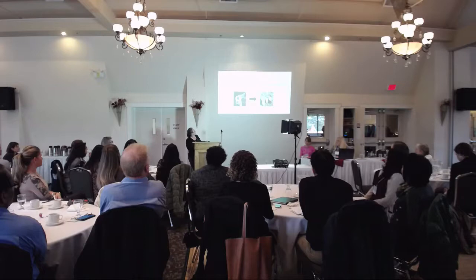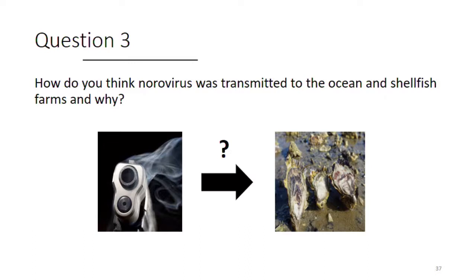So the next question — what was the smoking gun? How do you figure that out? What do you think was the most plausible hypothesis for why norovirus was somehow transmitted to oysters in these shellfish farms? You have five minutes.